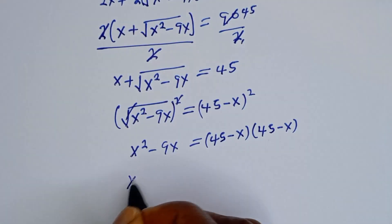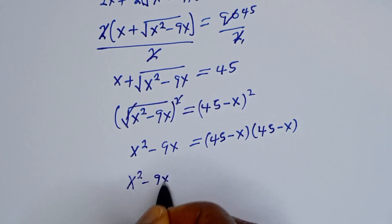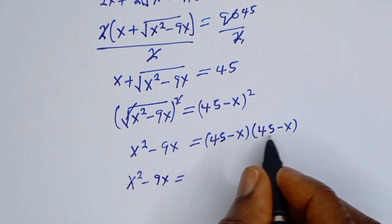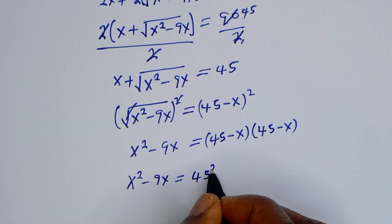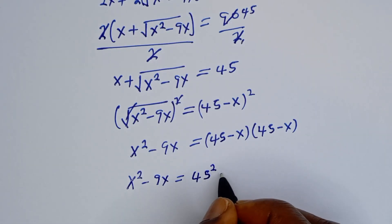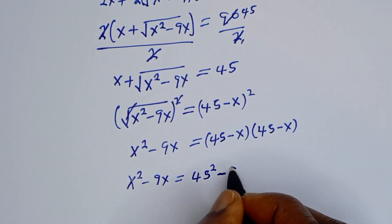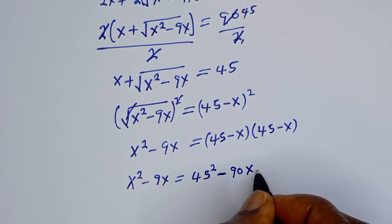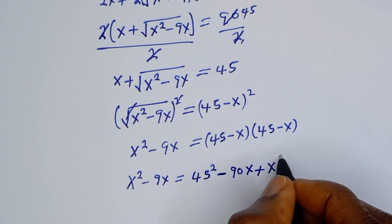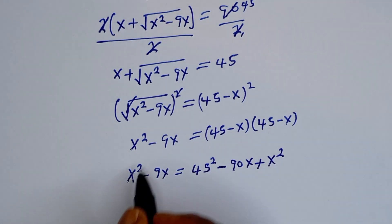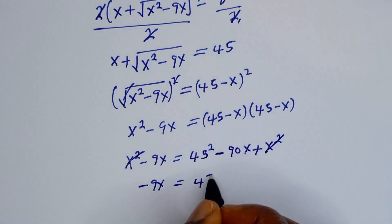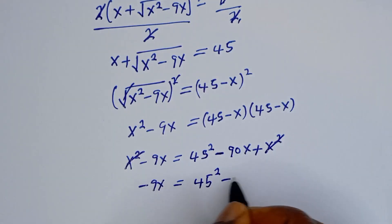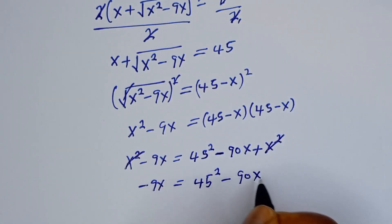Squaring cancels the square root on the left. We have s squared minus 9s is equal to 45 minus s, times 45 minus s. Opening the brackets: 45 times 45 is 45 squared, minus 90s, plus s squared. Now we cancel s squared from both sides, leaving minus 9s equal to 45 squared minus 90s.